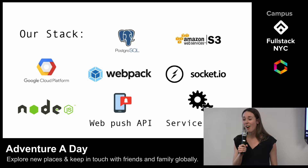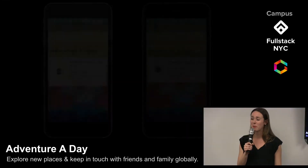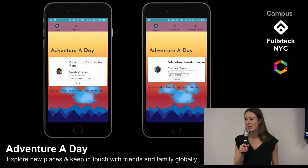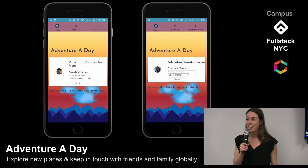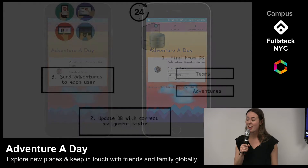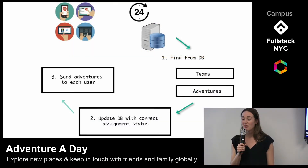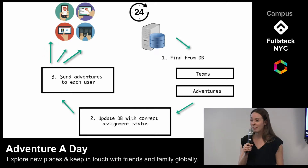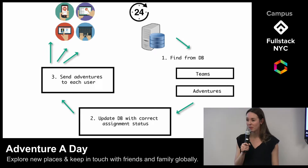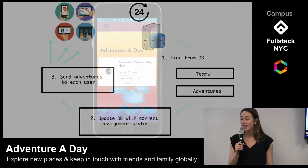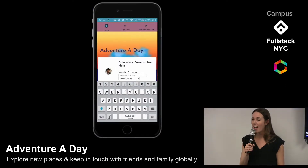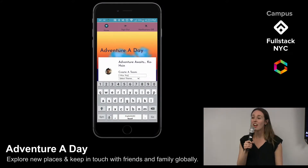In just one week, our fellow students Koshin and Sierra will be separated and they want a way to keep in touch. That's why they've signed up for Adventure a Day, which sends them a new shareable adventure every 24 hours. To do this, we have our game loop functionality set up on an interval. For each team with a current adventure, our server checks for challenges that have not been completed, then sends an adventure to each user on the team and notifies them.